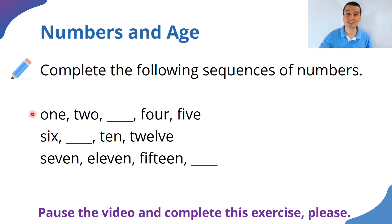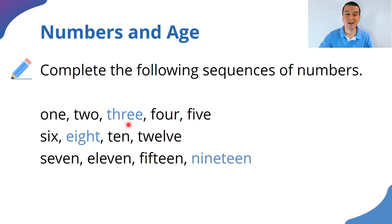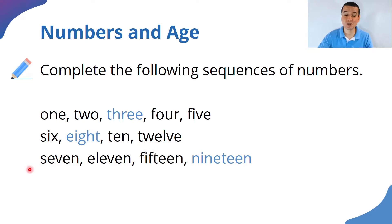Let me show you some sample answers. The first sequence: one, two — the answer is three, four, five. For the next one: six, eight, ten, twelve — they're skipping one number every two numbers. For the last one: seven, eleven, fifteen — the sequence is every four numbers — so the answer is nineteen. Good job!